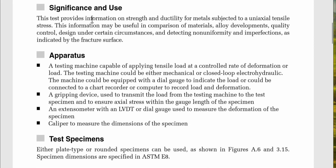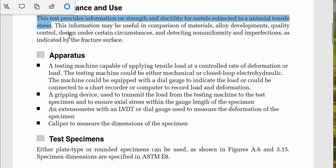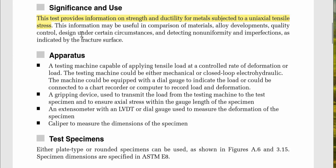The significance and use of this experiment: this test provides information on strengths and ductility for metals subjected to a uniaxial tensile stress. It applies to metals such as steel and aluminum. This information may be useful for comparison of materials, alloy development, quality control, design, and detecting non-uniformity and imperfections as indicated by the fracture surface.